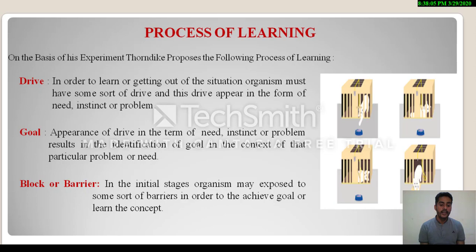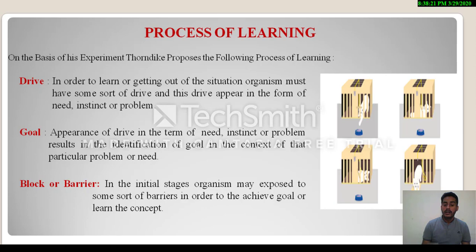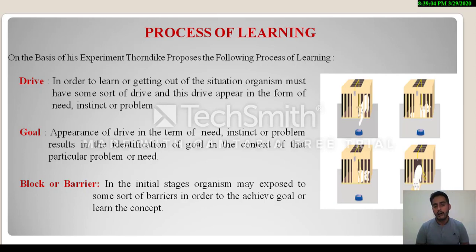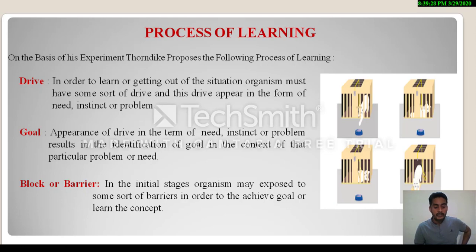Second point is goal appearance. Appearance of drive in the form of need, instinct, or problem results in identification of a goal. The cat was hungry and wanted to eat food — it could only satisfy its hunger by eating. So the cat established a goal: to eat the food placed outside the cage. According to Thorndike, if an individual or organism has some sort of drive, then it will be able to identify the goal to satisfy that need or problem.